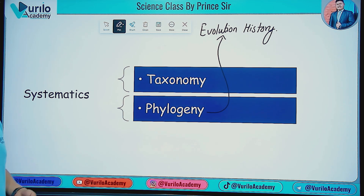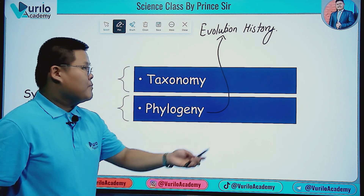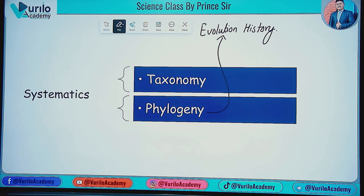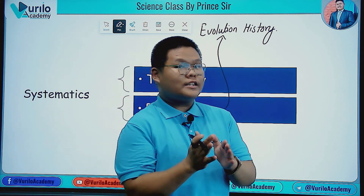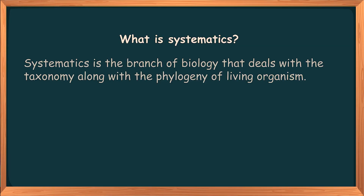Some of you studying taxonomy will encounter the term systematics. Systematics is the branch of biology that deals with taxonomy along with the phylogenetic study of living organisms — that is, their evolutionary history. This is the first important definition to know.